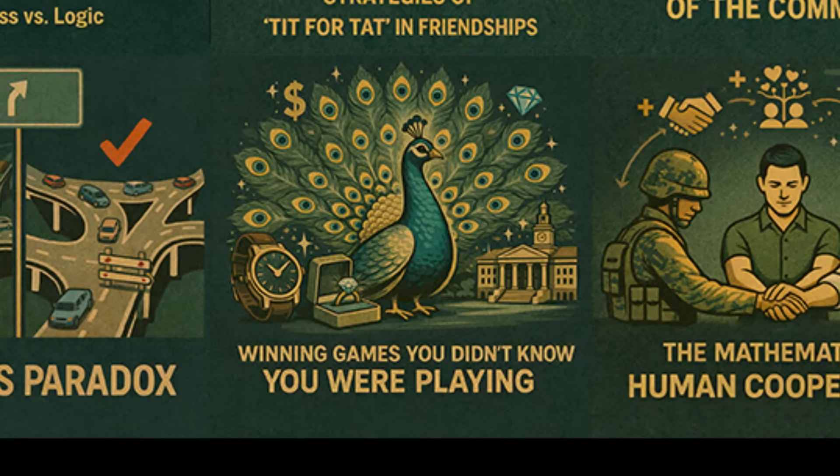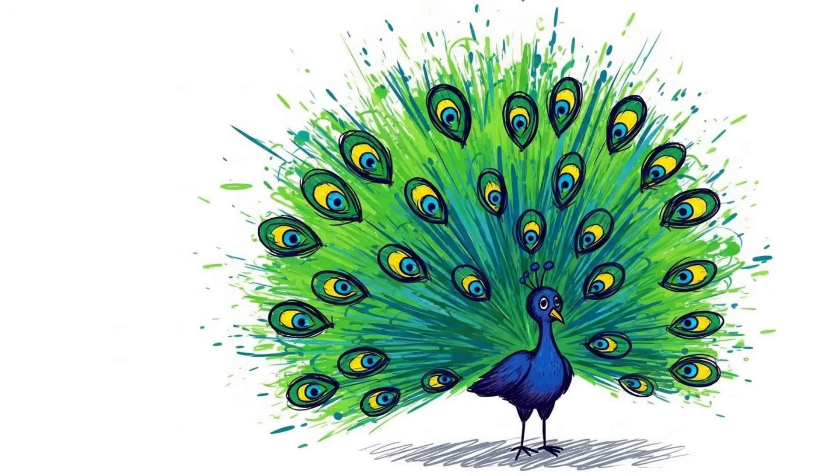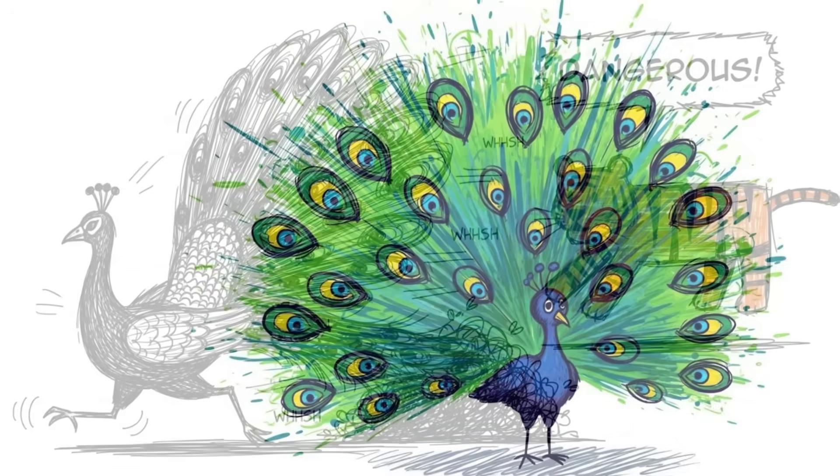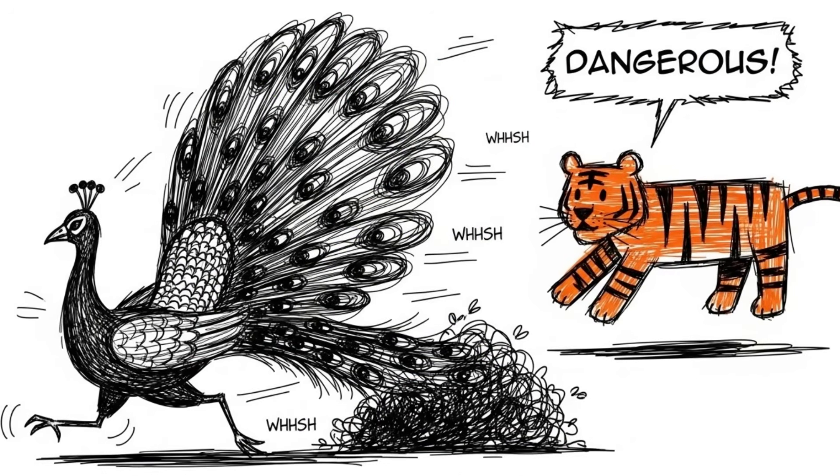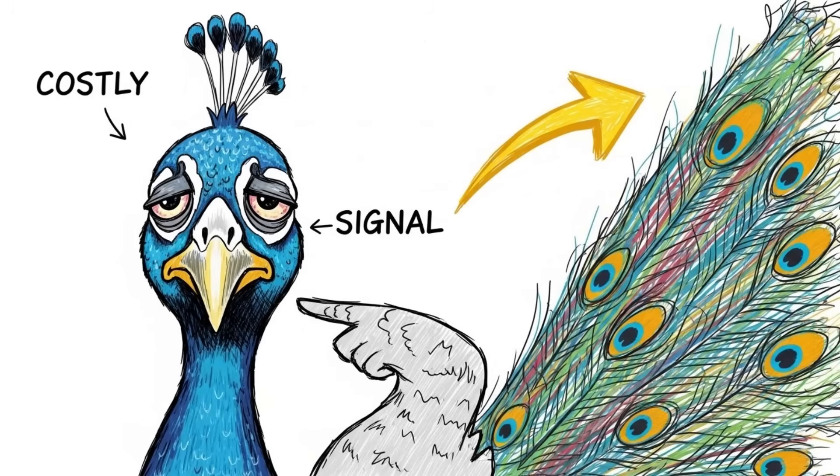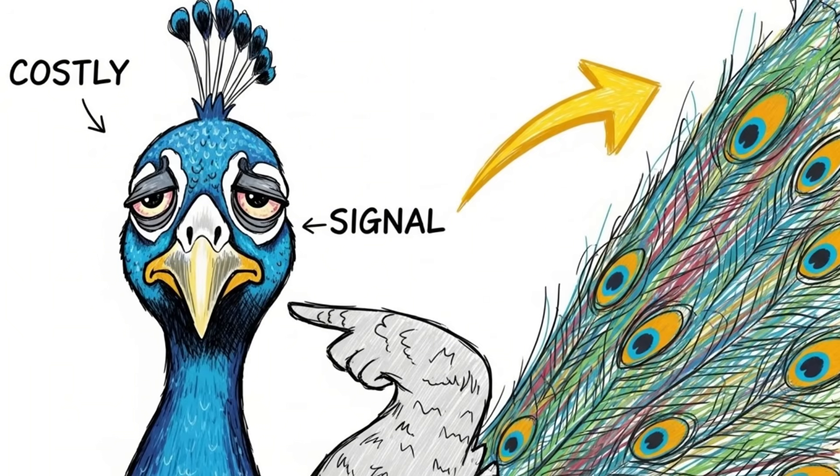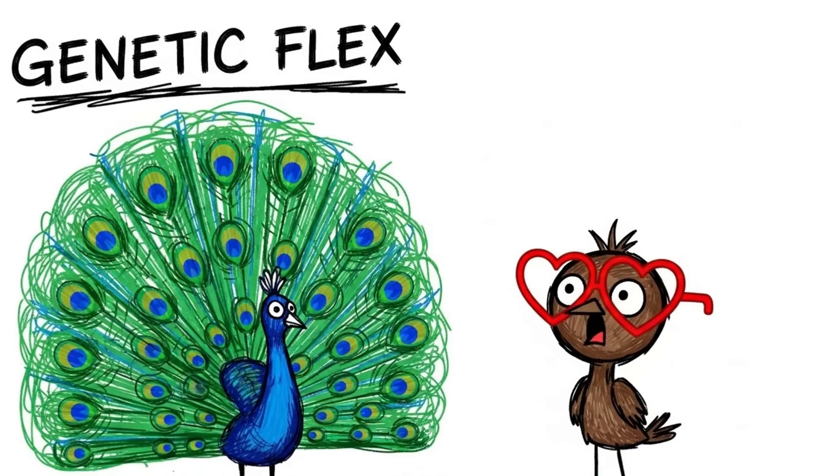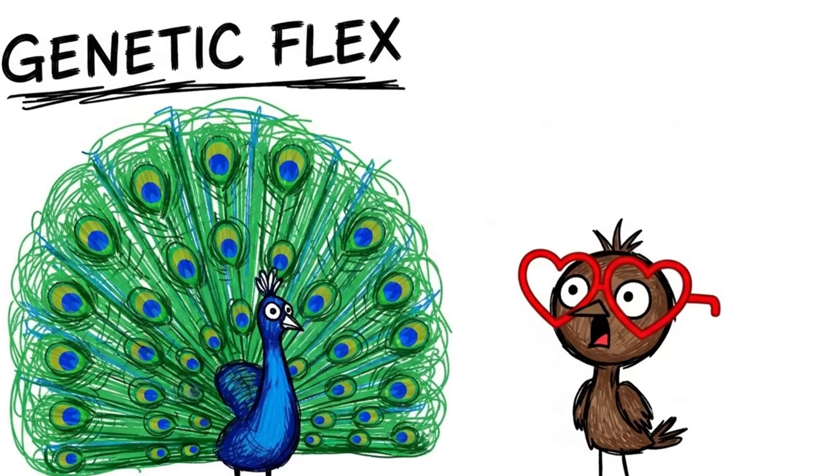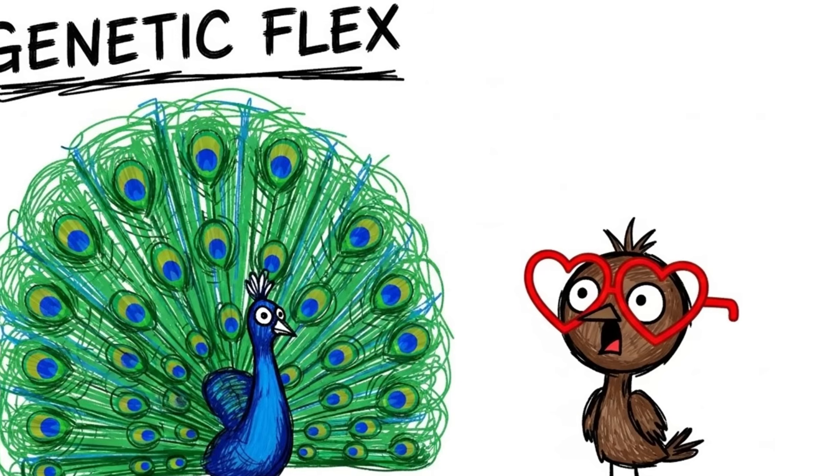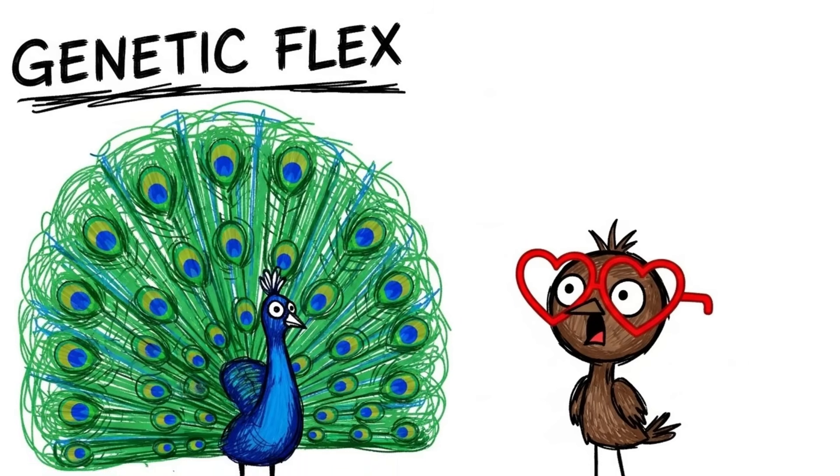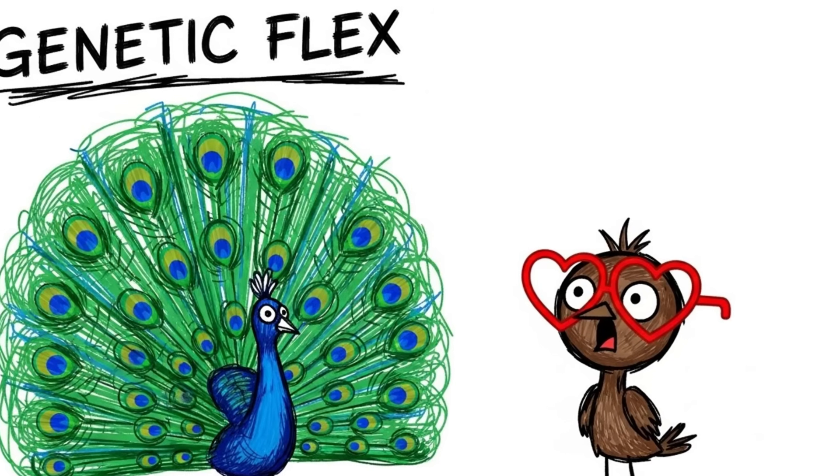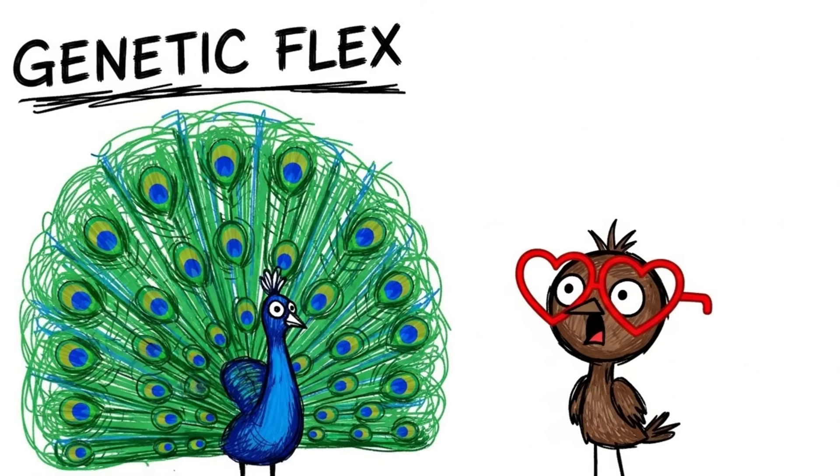Winning games you didn't know you were playing. Why does a peacock have a massive, colorful tail? It makes him slow. It makes him easy for tigers to eat. It is biologically expensive to grow. From a survival standpoint, it is stupid. But from a game theory standpoint, it is a masterpiece. It is a costly signal. The peacock is telling the peahen, look at me. My genes are so strong, I can afford to drag this heavy, useless billboard around and still survive. If the tail were cheap or easy to fake, it would mean nothing. The fact that it is a handicap is what makes it honest.